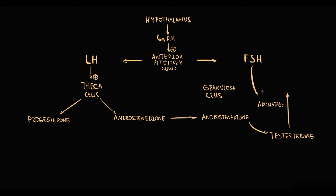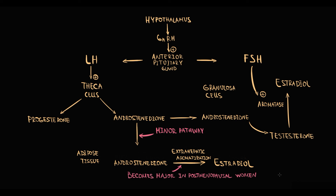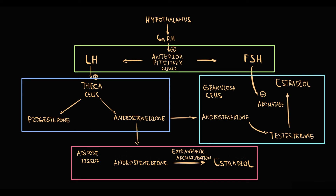Additionally, a portion of androstenedione and testosterone molecules from the blood are delivered to adipose tissue, where testosterone undergoes extrahepatic aromatization to form estradiol. Overall this is a minor pathway, but it becomes the primary source of estrogens in postmenopausal women.